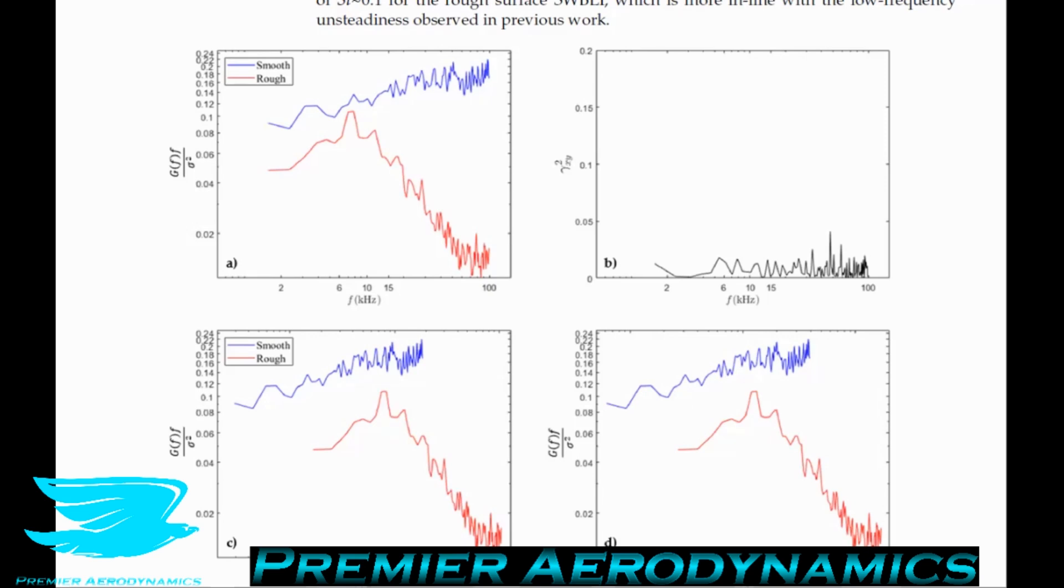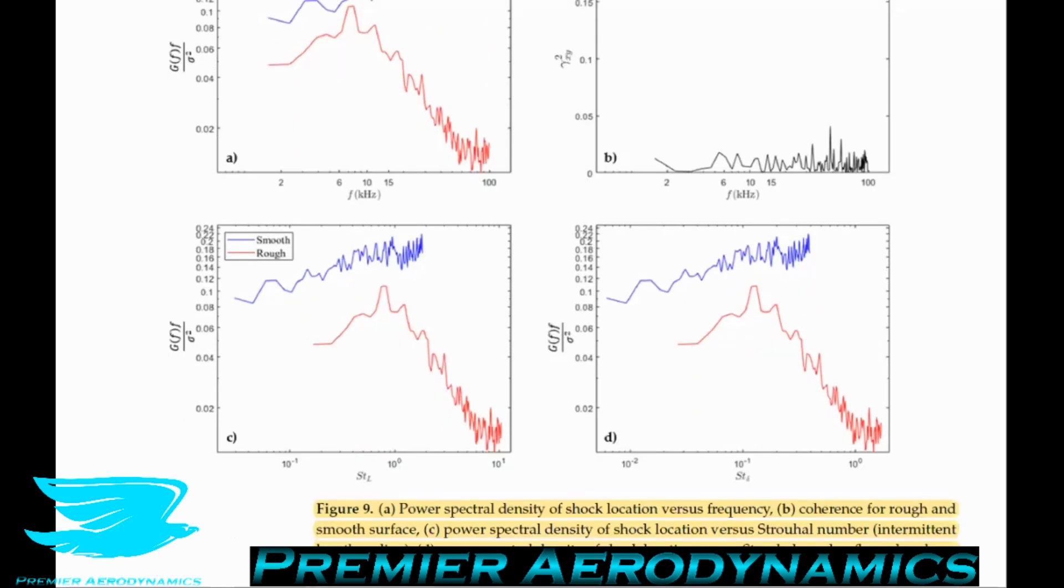Nevertheless, the analysis demonstrated that the shock wave boundary layer interaction dynamics for the two cases are considerably different. Figure 9C and D present these results in terms of the Strouhal number using two different length scales, the intermittent region length and the incoming boundary layer height. Whereas much of the previous literature for the compression ramp interactions employed a Strouhal number based on the intermittent length of the shock interaction, this scaling produces surprisingly high peak Strouhal numbers of 1 for the rough surface at least. For comparison, the incoming boundary layer thickness was used, which gave a peak intensity of a Strouhal number of 0.1 for the rough surface shock wave boundary layer interaction, which is more in line with the low frequency unsteadiness observed in previous work.